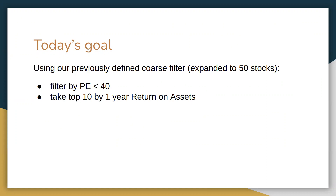What that gives us is: based on how much the company costs and its earnings, how many years will it take the company to make back what it's worth. Say a company is worth a thousand dollars and earnings per year are five hundred dollars — the P/E ratio is two, because 1000 divided by 500 is two. The lower the ratio, the more fundamentally valuable the company is.